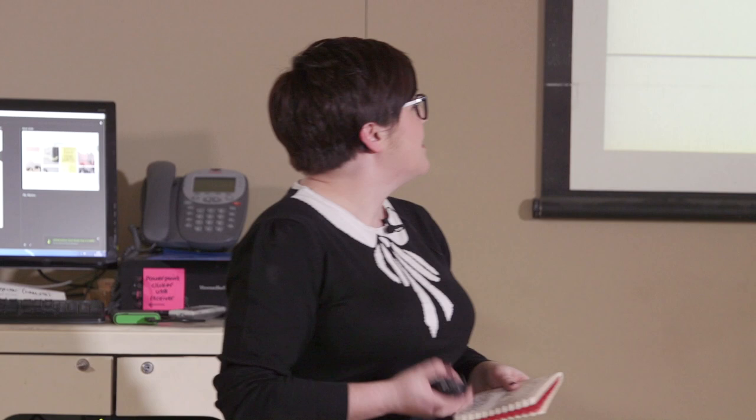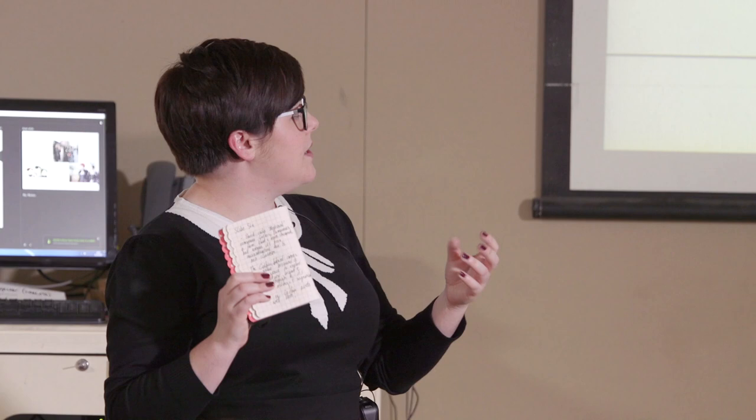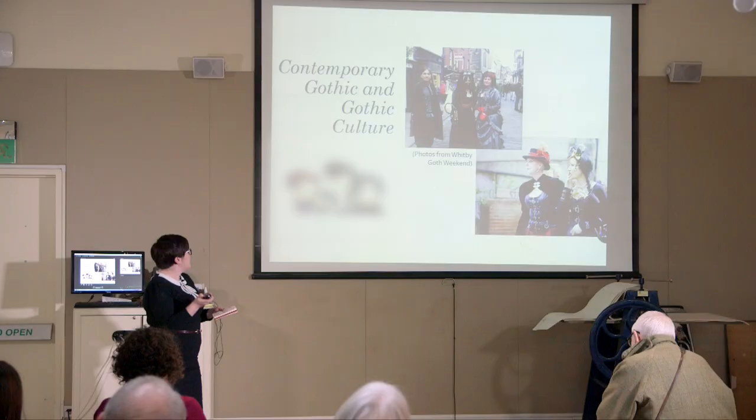Moving into the 19th century, we have texts you've probably all heard of — and for many of you this is probably what you think of when you think of gothic: Mary Shelley's 'Frankenstein,' Emily Brontë's 'Wuthering Heights,' Stevenson's 'Dr Jekyll and Mr Hyde,' and of course Bram Stoker's 'Dracula.' The gothic could be used as a way of presenting the other as dangerous and dark, something to avoid, or it could be used to explore something different and suggest that we should be doing something different.